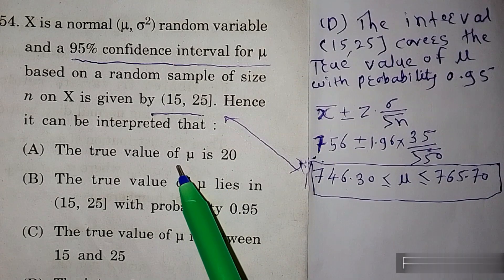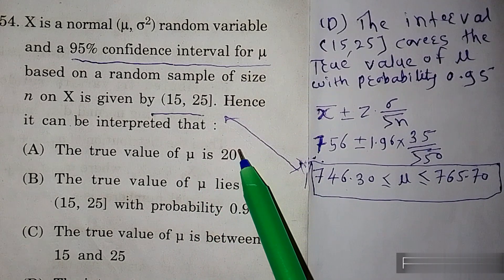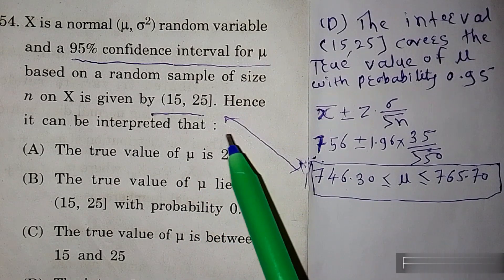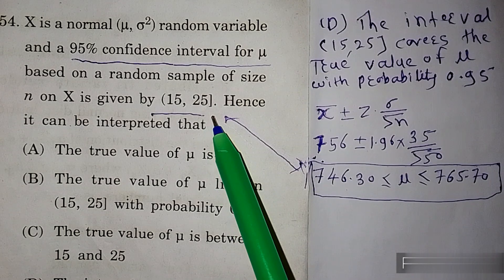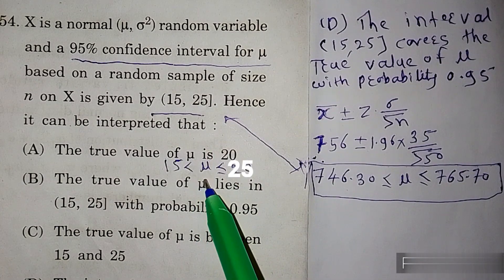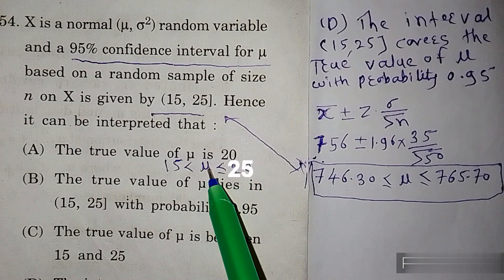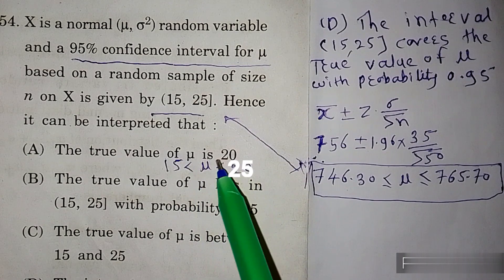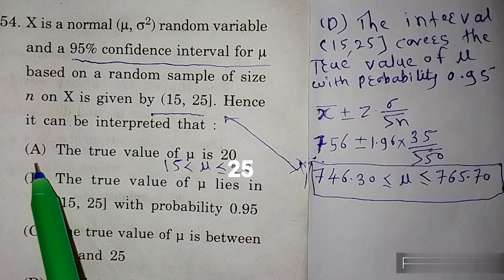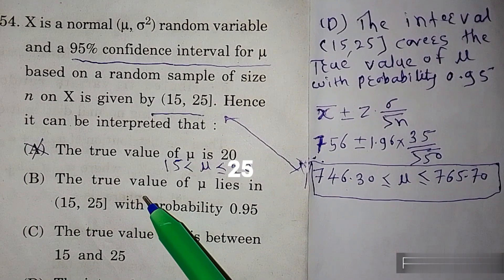Option A है: the true value of mu is 20. लेकिन इस interval को हम इस तरह लिख सकते हैं: 15 ≤ mu ≤ 25। अब mu की value तो दोनों के बीच में कुछ भी हो सकती है, hence option A true नहीं है।